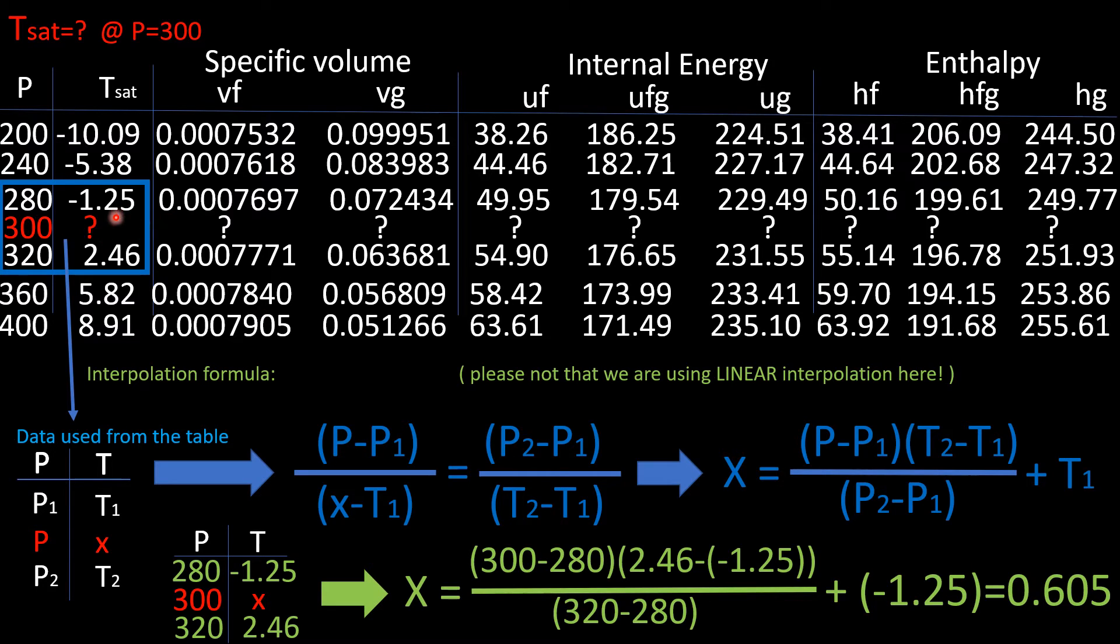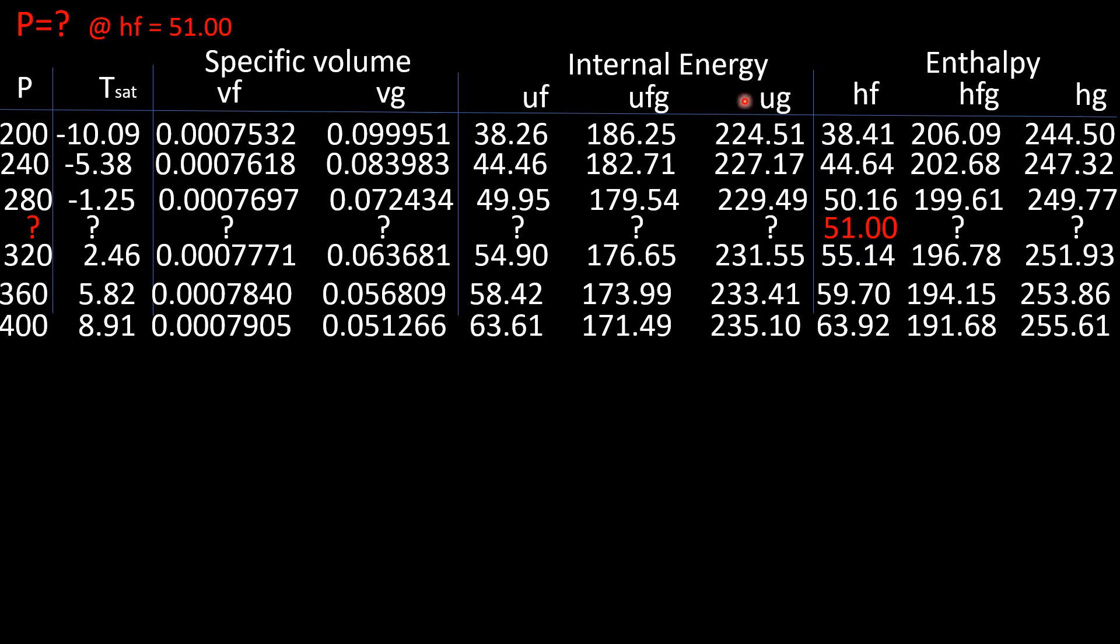Data was not given but we calculated it with interpolation. Now let's take a look at another example, and this time they want us to find P at hf equaling 51. hf is right here at the end, it's enthalpy.